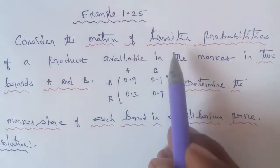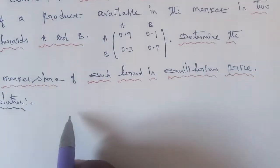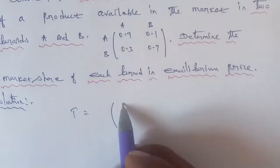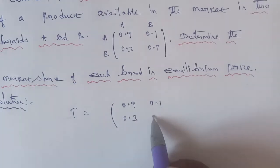You will have a transition probability matrix and the matrix is capital T. That is, capital T is equal to the matrix 0.9, 0.1, 0.3, and 0.7.